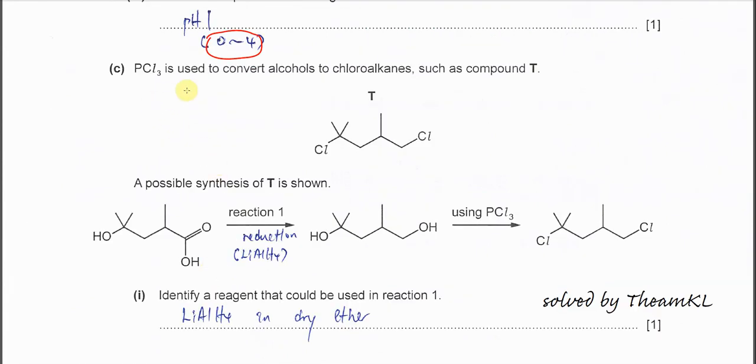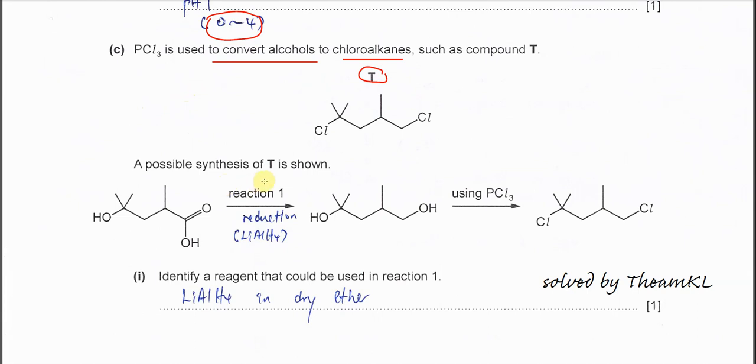Now Part C. PCl3 is used to convert alcohol to chloroalkane like compound T. A possible synthesis of T is shown through reaction 1 and using PCl3 later. For the first compound, after it undergoes reaction 1, it forms this alcohol from carboxylic acid to alcohol only. So we know it will undergo reduction. The carboxylic acid will reduce to alcohol, and we must use lithium aluminum hydride in dry ether only.